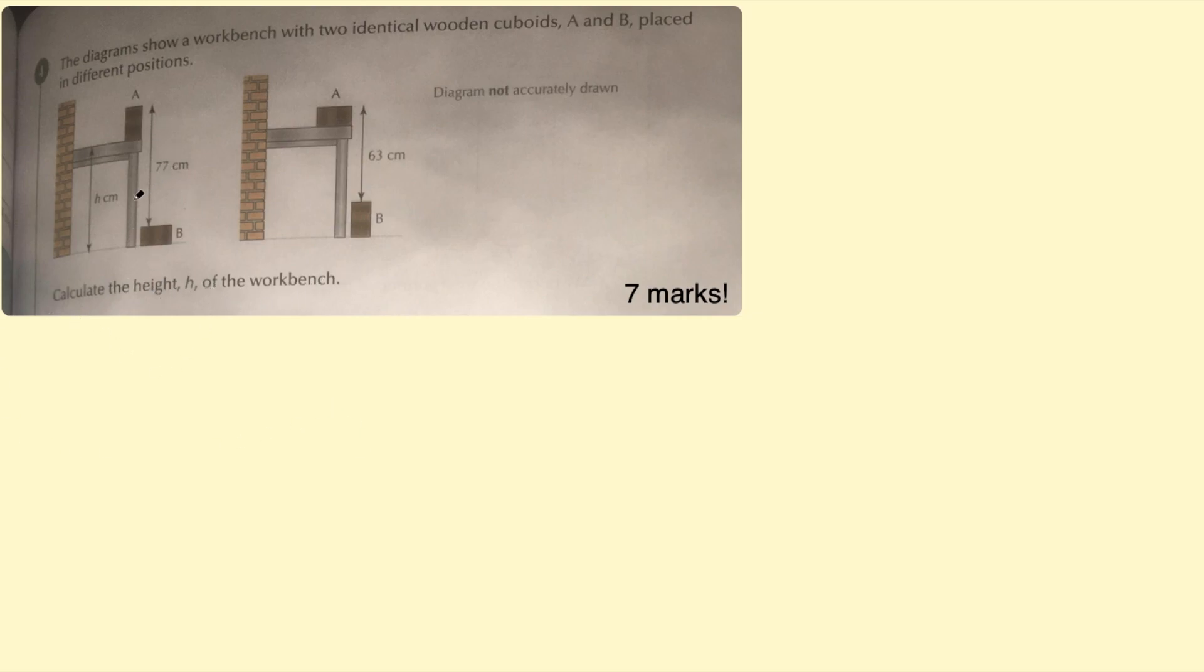Here we have the diagram and it says calculate the height H of the workbench. Okay, so let's take a closer look at these diagrams. Here's the height H and then these cuboids they say are identical. So in other words, the length and the width of each one are going to be the same. So what my mind immediately jumps to when I am given a question like this, where I've got two separate diagrams with slightly different measurements is that I'm thinking simultaneous equations and I'm thinking I want to create equations out of these diagrams.